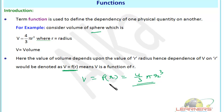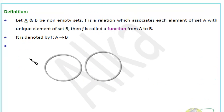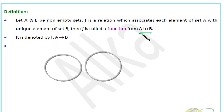Now let's discuss the formal definition of functions. Suppose A and B are non-empty sets. If f is a relation which associates each element of set A with a unique element of set B, then f is called a function from A to B. This is very important and it is denoted as f: A → B.